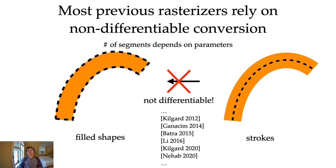For efficiency and convenience, many previous rasterizers would convert strokes into filled shapes. Unfortunately, this process is not differentiable, because the number of segments of the filled shapes depends on the stroke parameters. We do not want to do this. Instead, we will render the shapes directly without conversion.